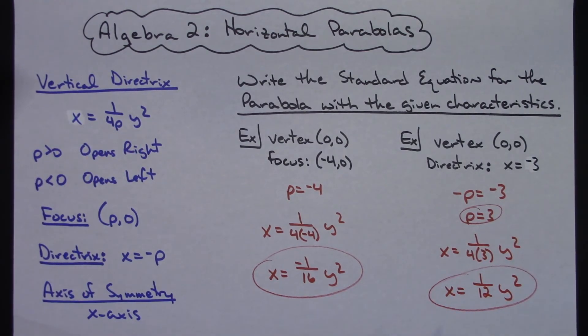So two relatively short and quick examples of how you go about writing the standard equation of a parabola when you are given a set of conditions. And both of these focusing with the vertex at 0,0 so not shifting away from that origin.